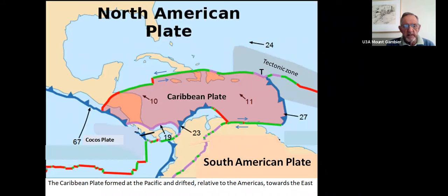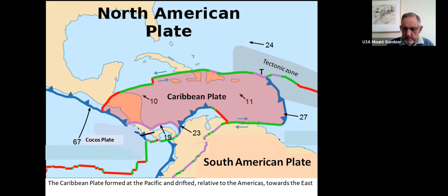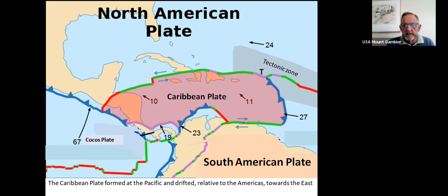The Caribbean Plate formed at the Pacific and sort of rolled back like a toilet roll falling on the floor and starting to roll back — that's relative to America — and it moved eastward, so that if you looked at that subduction zone 20 million years ago it was probably over near the Caribbean Sea, whereas now it's way over into the Atlantic. There's a grey zone marked there — a tectonic zone — meaning there's a deal of crushing, faulting, and earthquakes from tectonic instability.